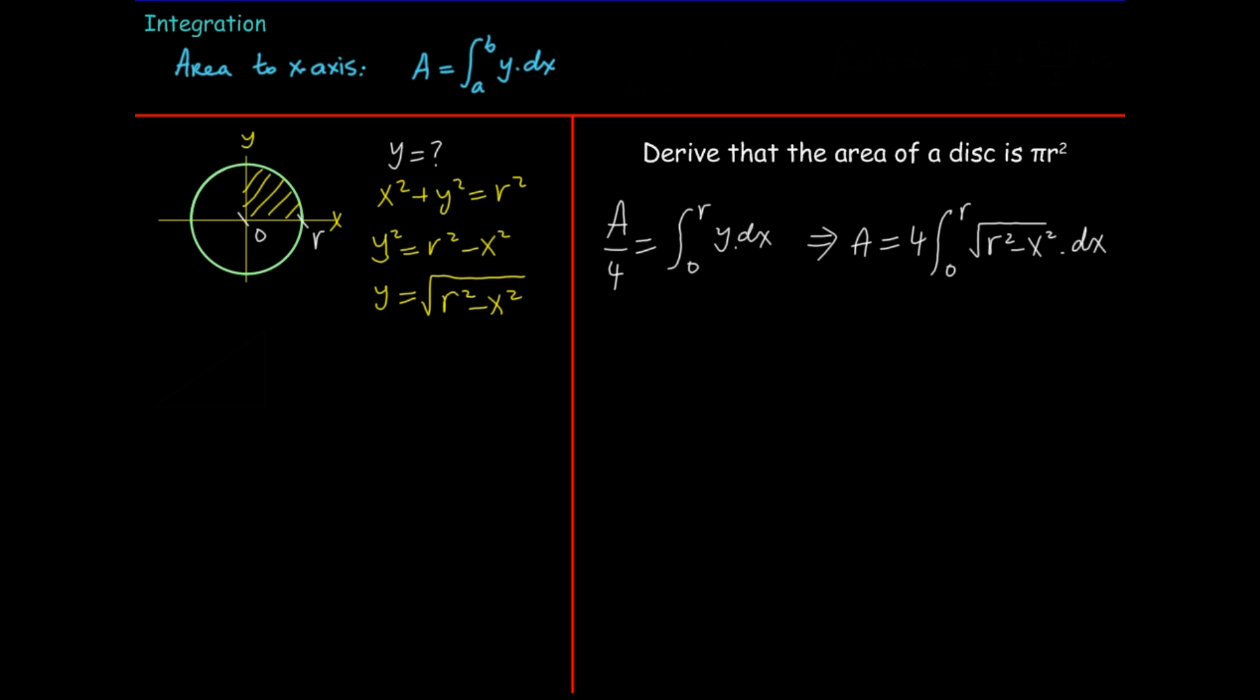Now the trick involved is how do we integrate this and the trick is that we replace x with r sine theta. We'll draw a little triangle here, call the angle theta, the hypotenuse r, the opposite side x, and using Pythagoras's theorem the adjacent side would be r squared minus x squared. Sine theta in this case would be opposite over hypotenuse or x over r, so x is equal to r sine theta.